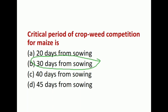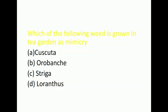Next question: Which of the following weed is grown in tea garden as a mimicry weed? Options are Cuscuta, Orobanche, Striga, and Loranthus. The right answer is Loranthus. Loranthus is a parasitic plant that grows on branches of woody trees. It belongs to the family Loranthaceae.